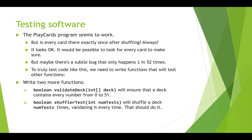Then we'll write another function that calls validate deck — we'll call this the shuffler test — and we'll pass in an int, which is the number of tests we want to run. Maybe we want to run 10 tests or 1,000 tests, calling validate deck that many times to make sure there isn't a subtle bug. Shuffler test will also return a boolean: true if all tests pass, false if any test fails.